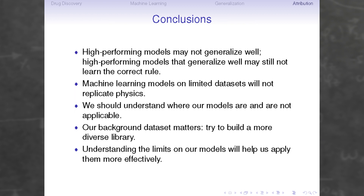In summary: high-performing models on a generic validation set might not generalize well. And high-performing models that do generalize well may still not learn the correct rule. Because of this, machine learning models on small, limited datasets are not going to accurately replicate physics — we can't relearn physics from a dataset of a thousand molecules bound to a protein. But we can use our models effectively if we understand where they are and are not applicable, and if we develop a more diverse library as our background dataset with less bias, enabling better attribution. Thank you.